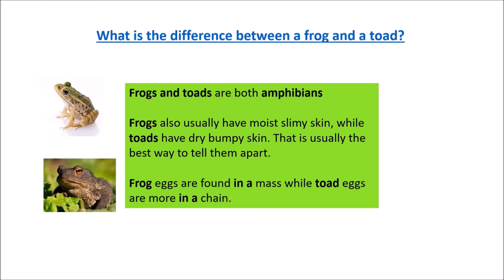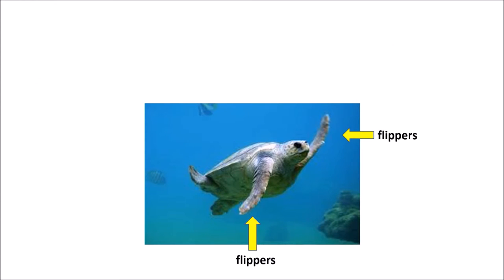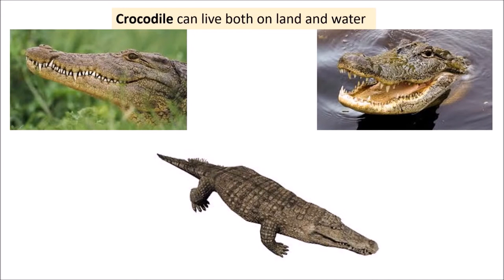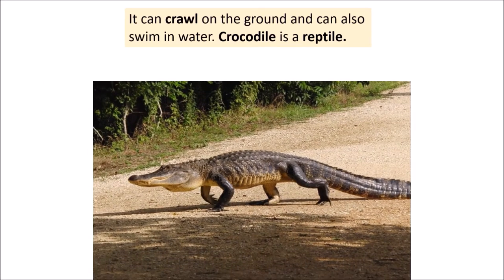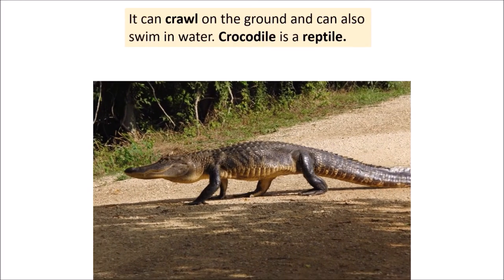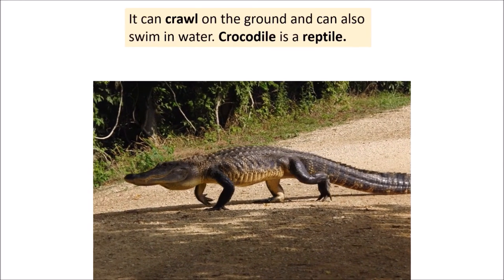The next water animal is turtle. Turtles live in water for most of the time and have flippers for swimming. They come to land when they have to lay eggs. Turtle is a reptile. Crocodile can live both on land and water — it can crawl on the ground and can also swim in water. Crocodile is also a reptile.